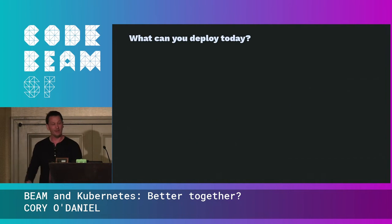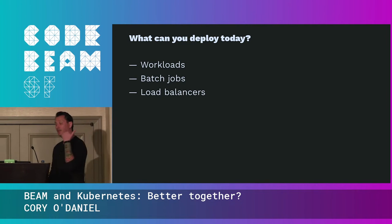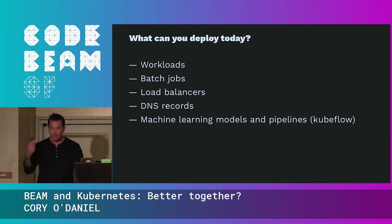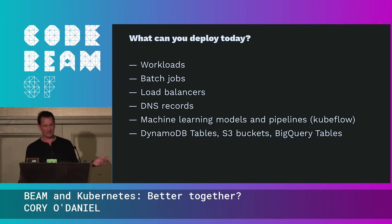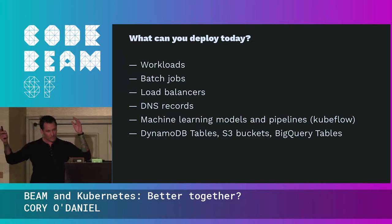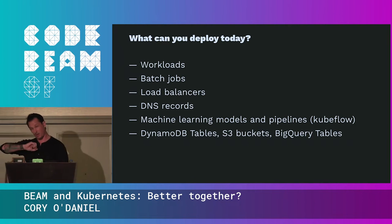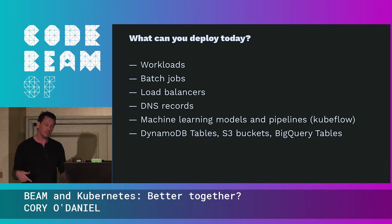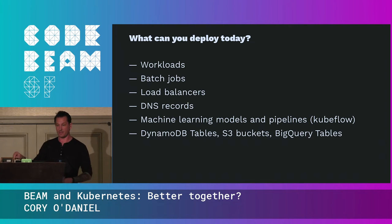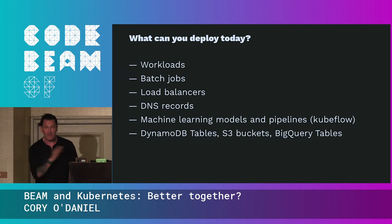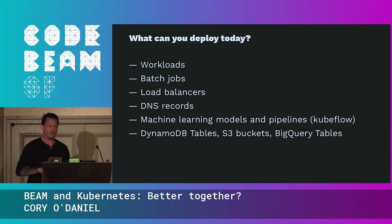That probably sounds nuts, but when we look at what we're doing with it today — workloads, batch jobs, load balancers, DNS records — then machine learning models and pipelines using Kubeflow, DynamoDB tables, S3 buckets, BigQuery tables. AWS released something called the Service Operator that lets you create SNS, SQS, Memcache, and Redis instances all through the Kubernetes API. GCP released a tool called Config Connector that allows you to make any GCP resource through the Kubernetes API. I can use kubectl to manage all of my GCP resources.